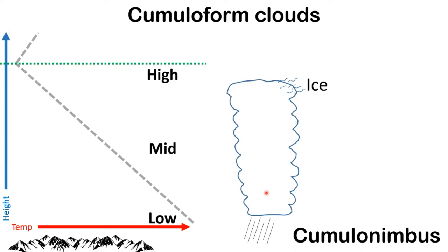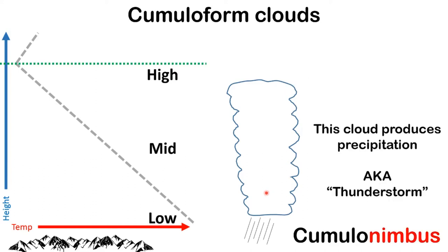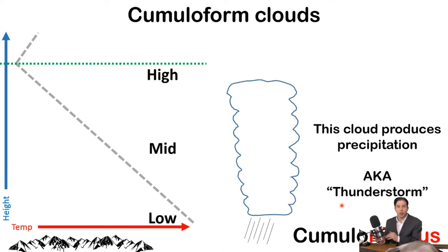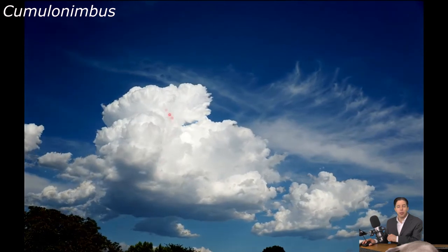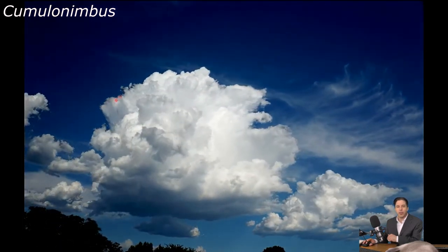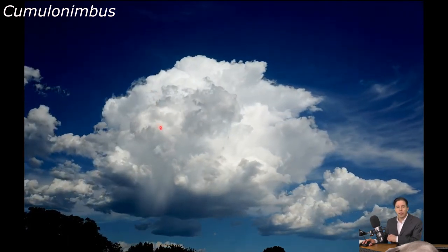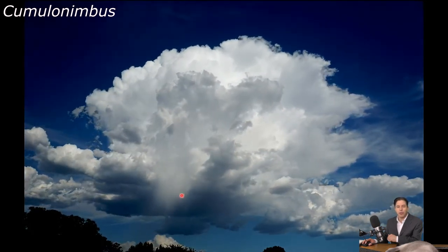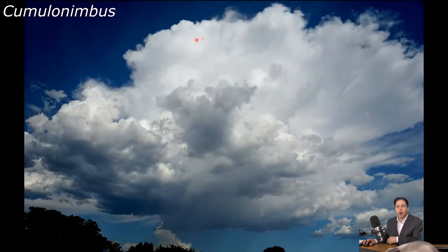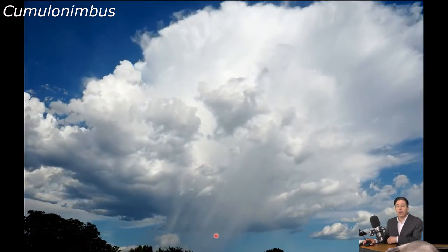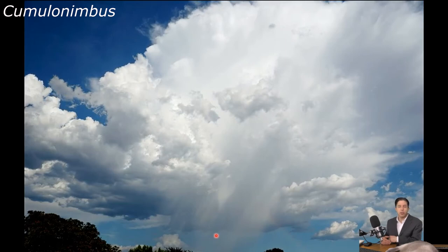The 'nimbus' means precipitation — it could be rain, snow, hail, or sleet. Anytime you have a puffy cloud producing precipitation, we call it cumulonimbus. Commonly these are called thunderstorms, but you don't actually have to have thunder to have a cumulonimbus. Here's one being born in time-lapse: a cumulus cloud with a flat bottom and warm air rising. Watch near the top — it starts to look fuzzy on the edges; that's what ice looks like. Ice is falling down inside the cloud, and streaks of precipitation come out the bottom. We saw the transition from cumulus to cumulonimbus.